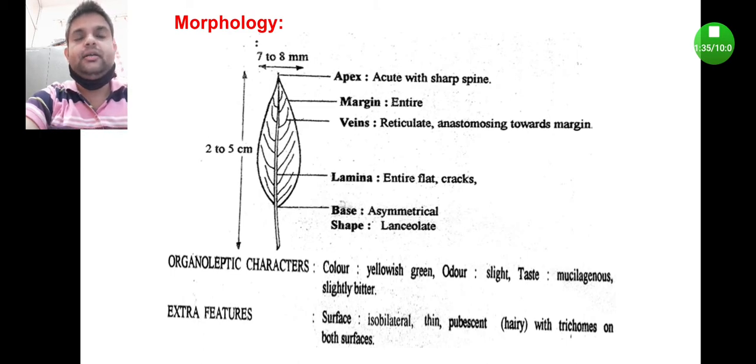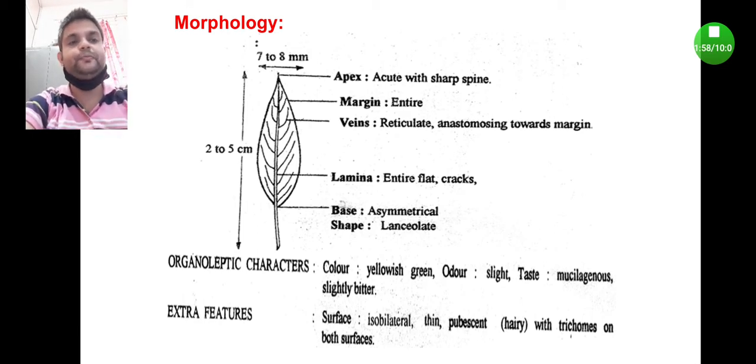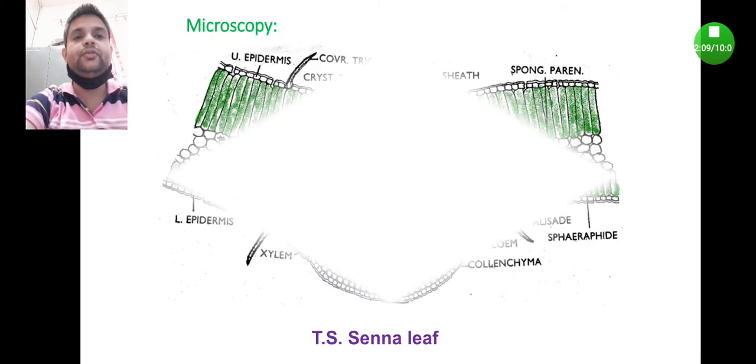Coming to the external features, surface is ISO bilateral, thin and pubescent - meaning the upper layer is hairy with trichomes on both the surface. Both the upper layer and lower layer is very smooth due to the presence of trichomes.